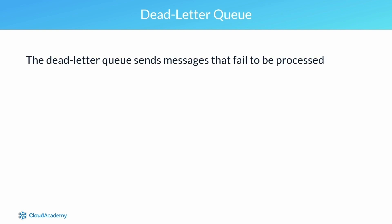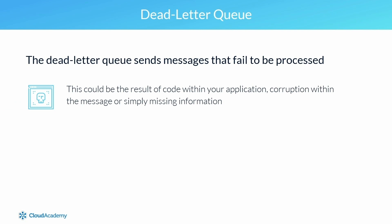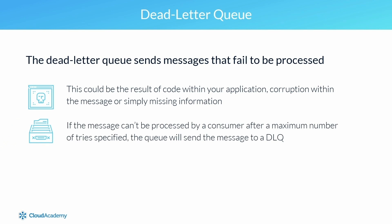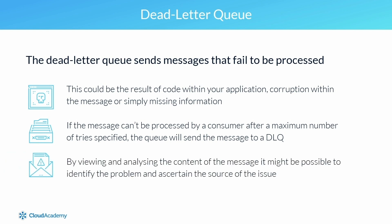A dead letter queue differs from standard and FIFO queues, as it is not used as a source queue to hold messages submitted by producers. Instead, the dead letter queue is used by the source queue to send messages that fail processing — whether due to code issues within your application, corruption within the message, or missing information within a database. If the message can't be processed by a consumer after a specified maximum number of tries, the queue will send the message to a dead letter queue. This allows engineers to assess why the message failed and identify where the issue is, helping prevent further messages from falling into the dead letter queue.